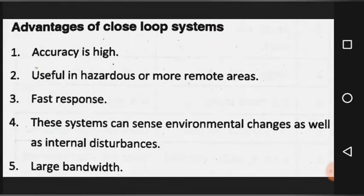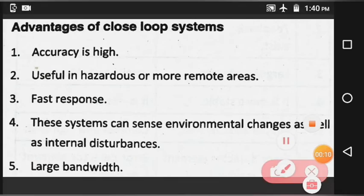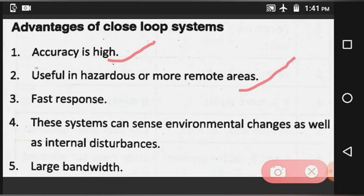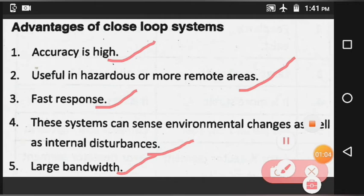The advantages of a closed loop system are: first, accuracy is high; second, it is useful in hazardous or remote areas; third, this system can handle environmental changes as well as internal disturbances; and fourth, the bandwidth is large.